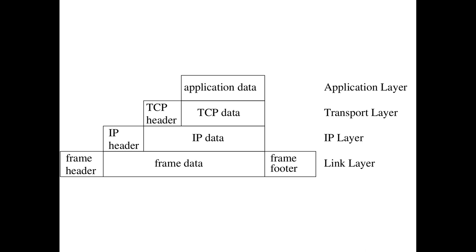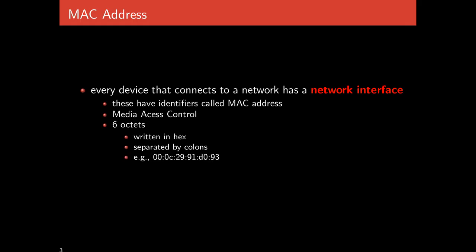A MAC address is a serial number assigned to every single piece of networking hardware. They're called Media Access Control, and it is six octets written in hex and separated by colons. It is basically a serial number tied to every single piece of networking hardware. These serial numbers allow actual hardware to be unique, have a unique number associated with them, and can therefore be used as a way of separating, isolating, and recognizing different computers.